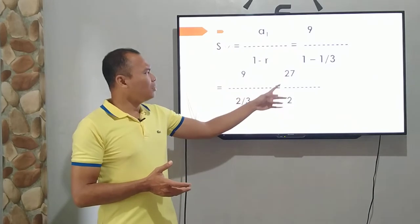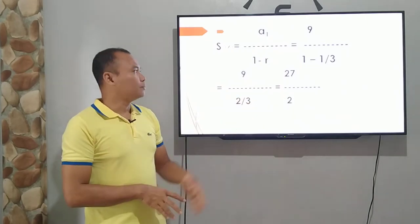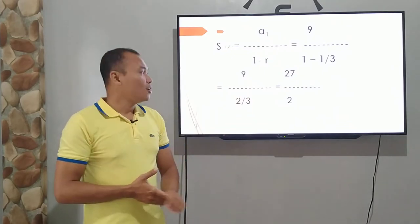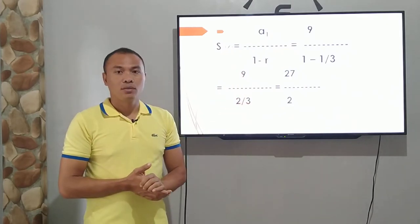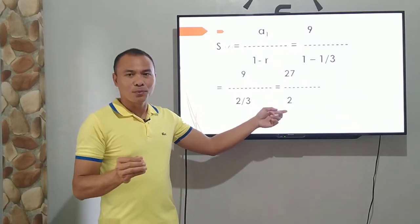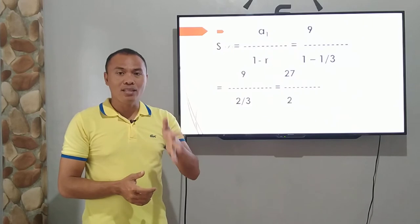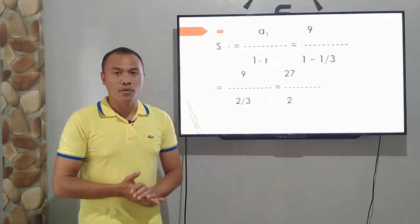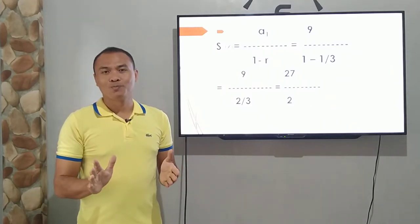And bakit naging 27 over 2 ang ating sagot? Ganito lang siya kadali. When we are dividing, cross multiplication. So 9 times 3. What's 9 times 3? 27. 27 over 2. So kung ayaw maniwala, you can press your calculators. 9 over 2 divided by 2 over 3. And the quotient is 27 over 2.